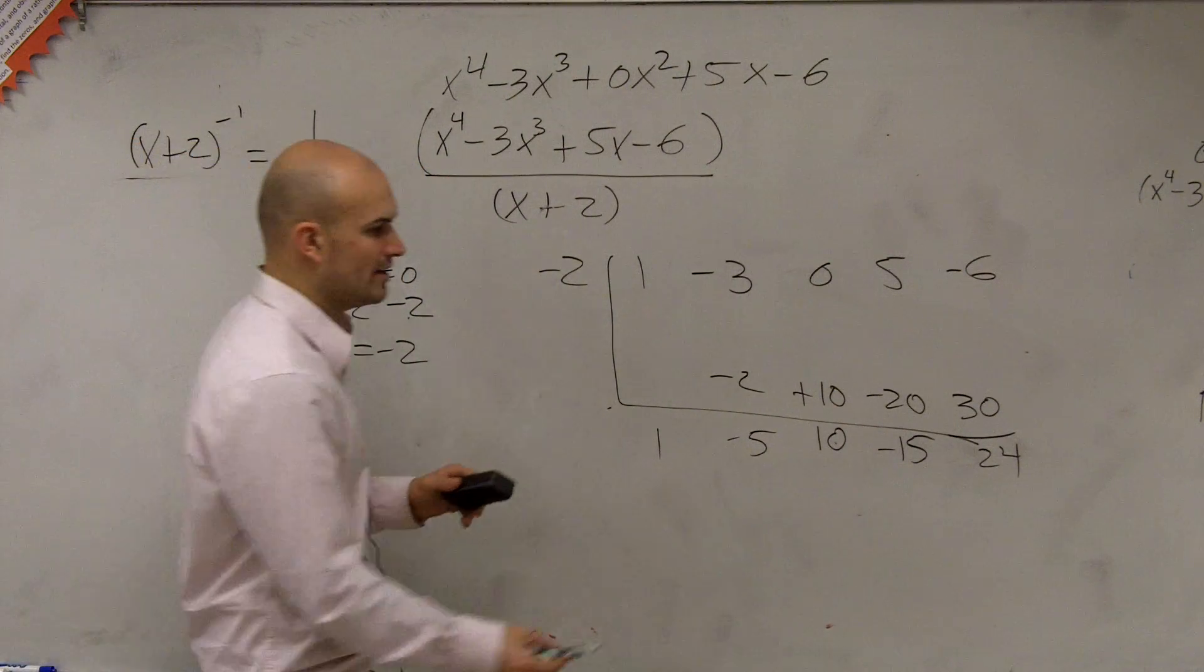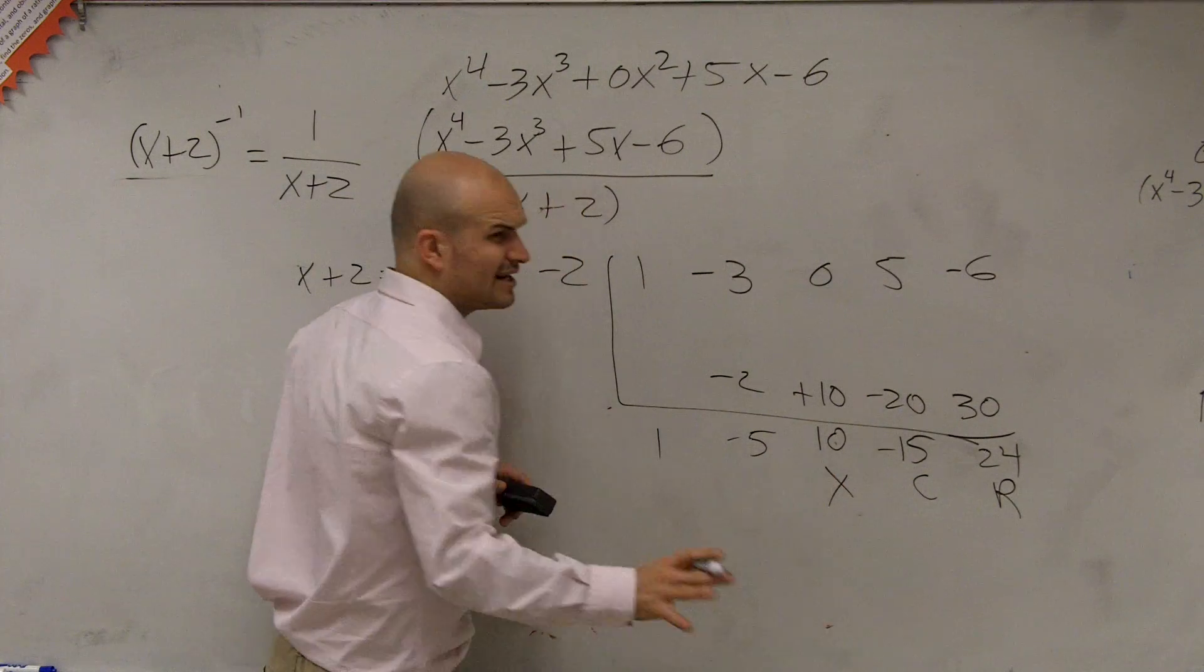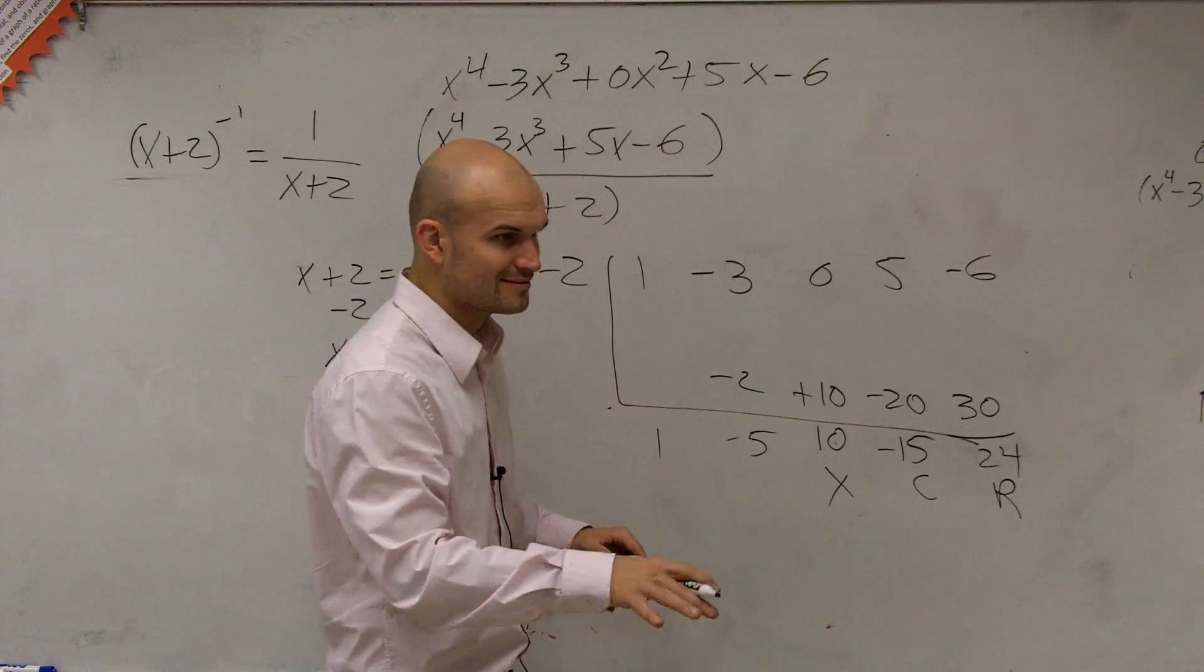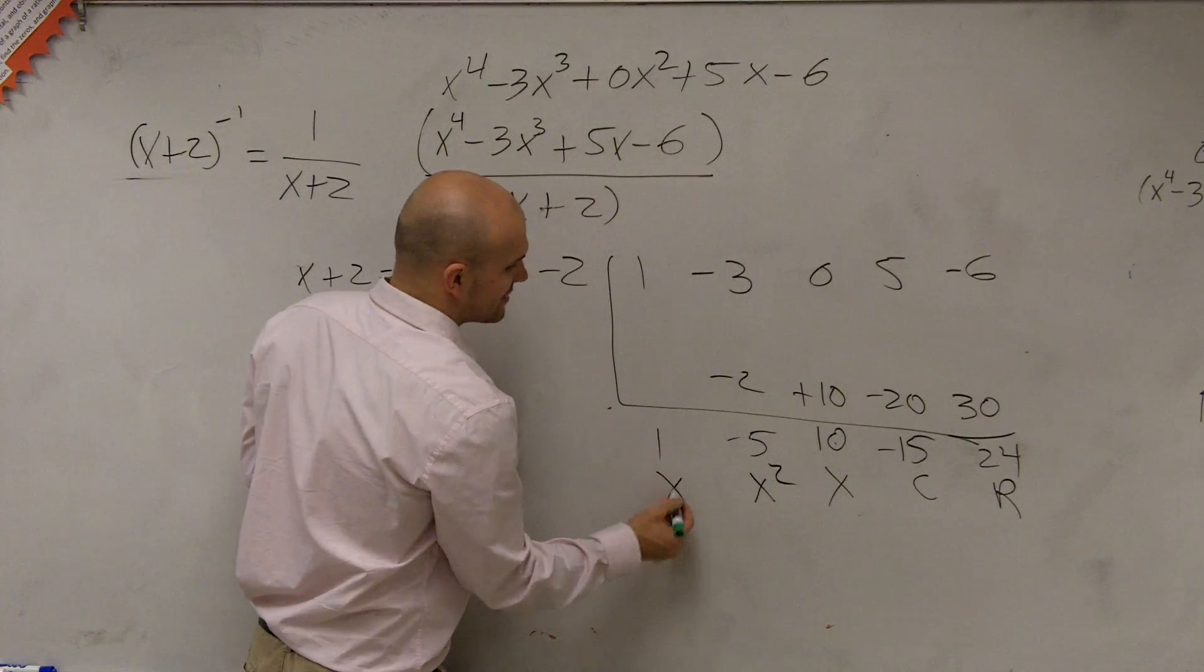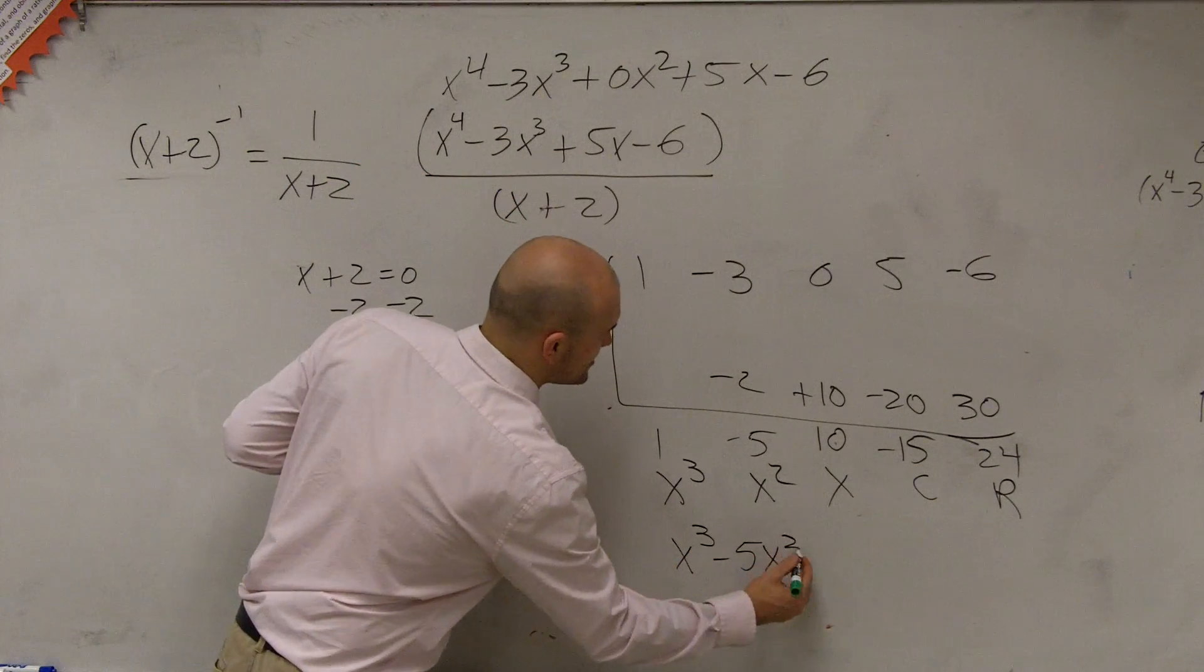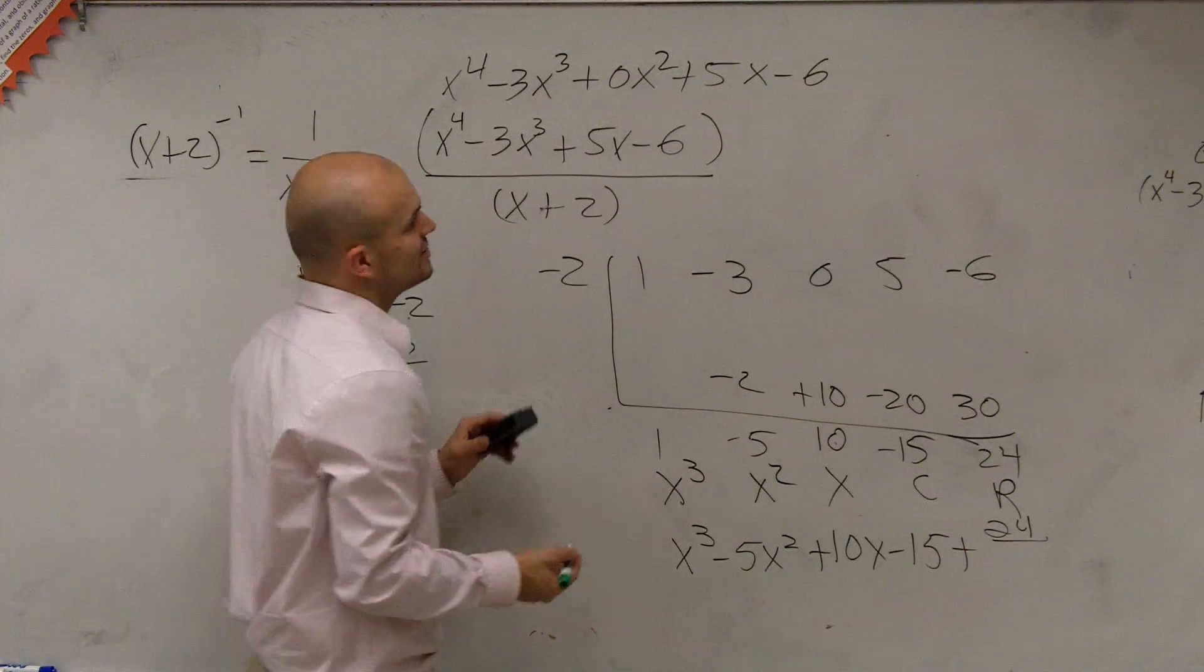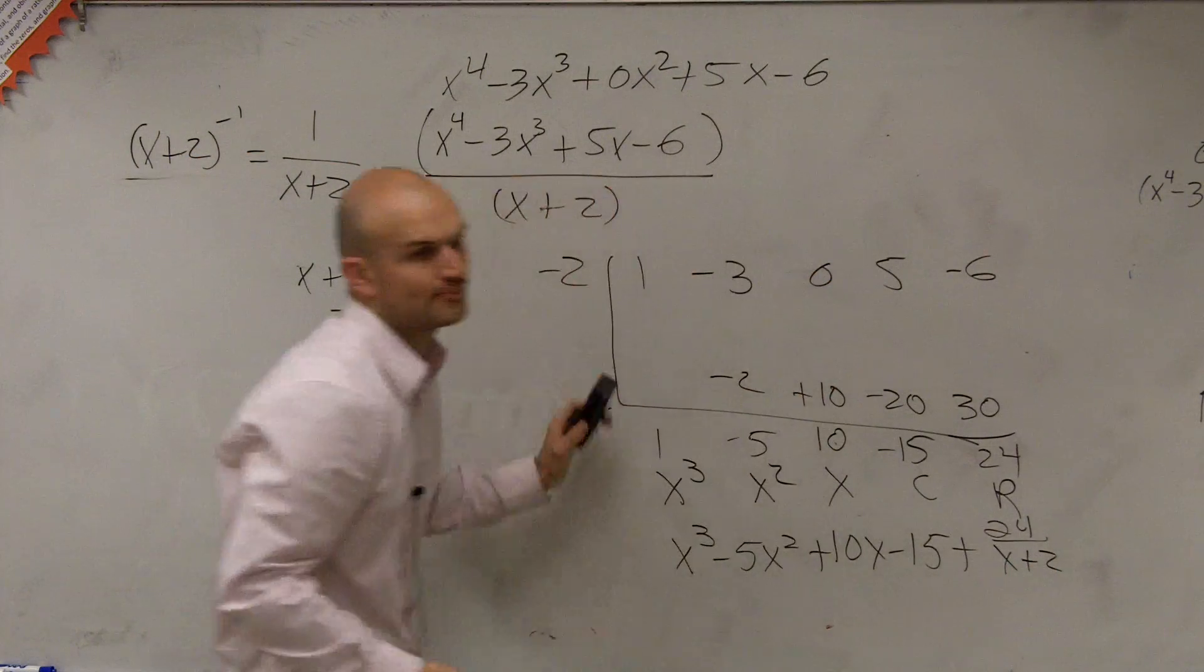Right? So now, it goes remainder, constant, linear, quadratic, cubic. So my final answer is x cubed minus 5x squared plus 10x minus 15 plus your remainder divided by your divisor, which is x plus 2. OK?